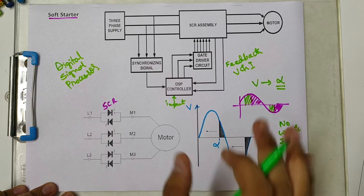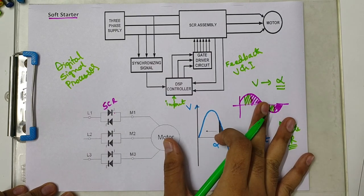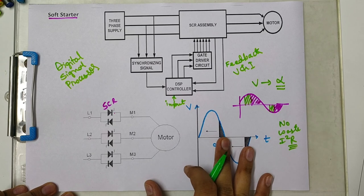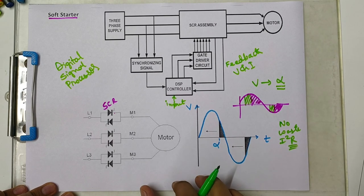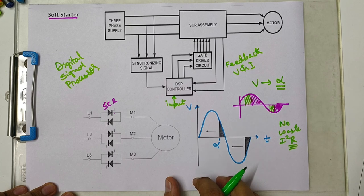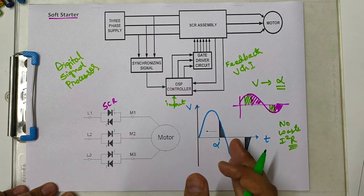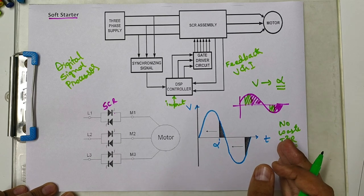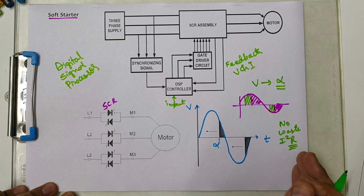These types of starters are very efficient, so nowadays they are more readily available in industries and used in many applications. They can be easily made for small rating motors as well as very heavy rating industrial motors.